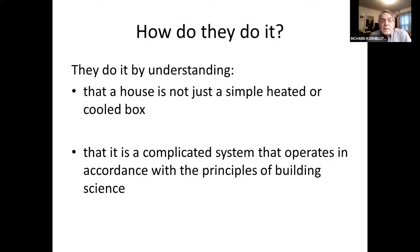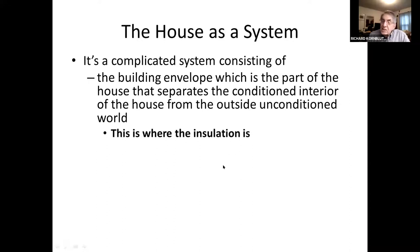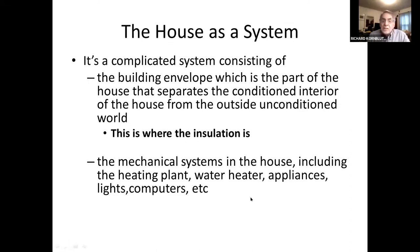So how do they do it? They do it by understanding that a house is not just a simple heated or cooled box — it's a complicated system that operates in accordance with the principles of building science. That system consists of the building envelope, which is the part of the house that separates the conditioned interior from the outside world. This is where the insulation is. It includes the mechanical systems — the heating plant, water heater, appliances, lights, computers, etc. — and it includes the home's occupants.